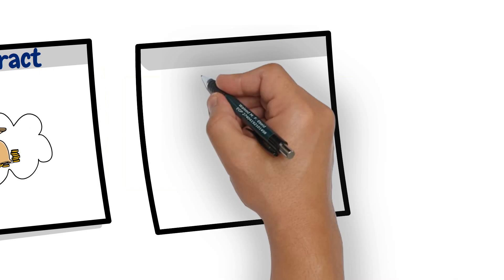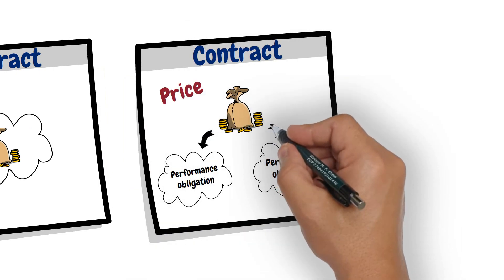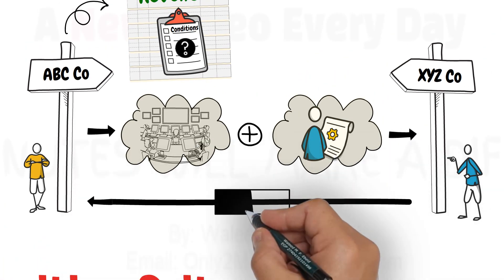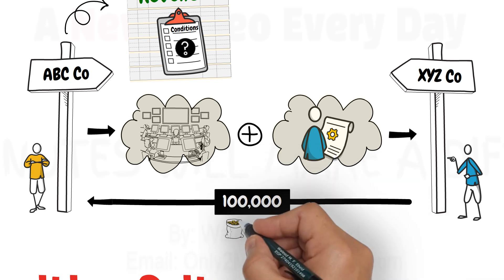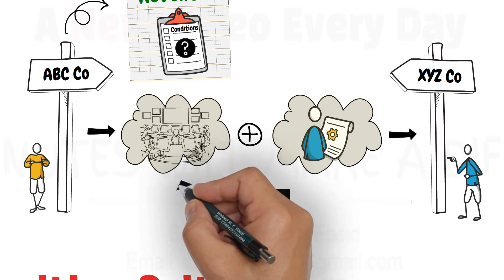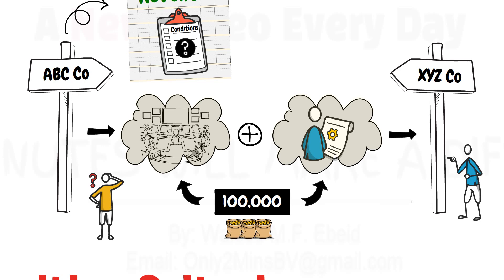The fourth condition: the transaction price should be allocated among the performance obligations in the contract. Suppose that the contract in our example stated an overall price of $100,000 for both the installation of the security system and the delivery of the maintenance service. We should figure out how much of that $100,000 is the price for the system installation and how much is for the maintenance service. Let us assume that the price allocated to the system installation is $90,000 and $10,000 for the maintenance service.